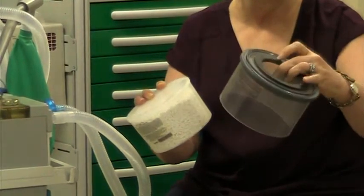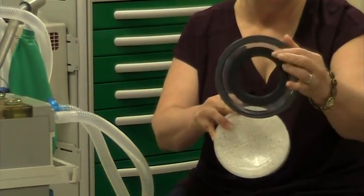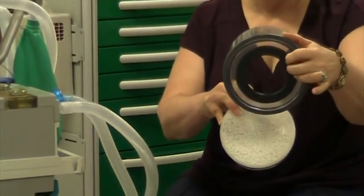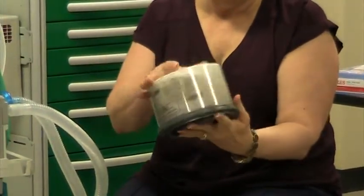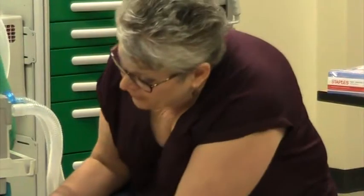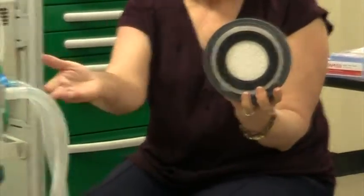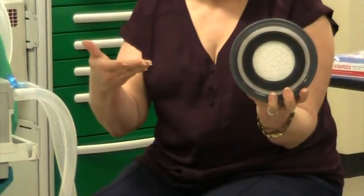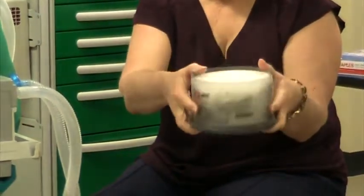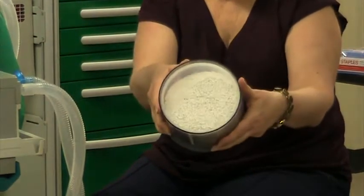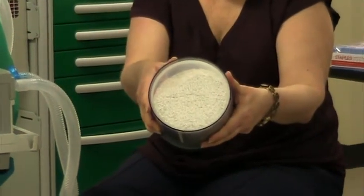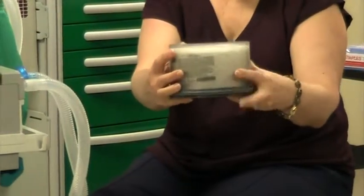On the bottom here you can see there is a sealing ring, a rubber ring, so that you get a full seal when you put this in the machine. You can also see there is an open space here, so as the exhaled air comes through, it comes up and meets all the four to eight mesh of the carbon dioxide absorbent granules.